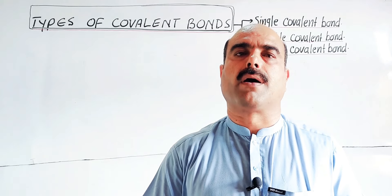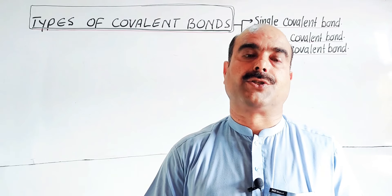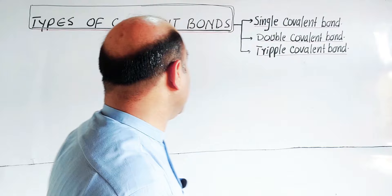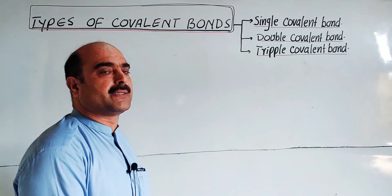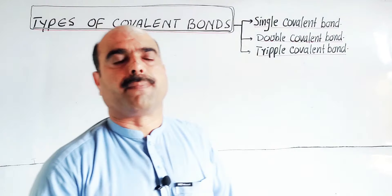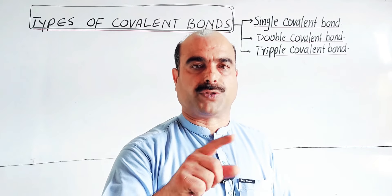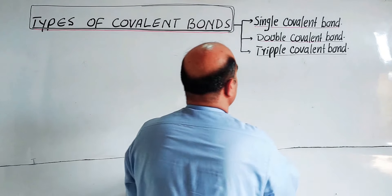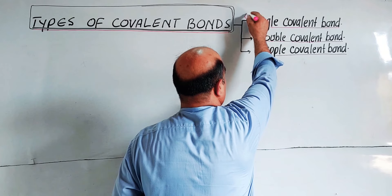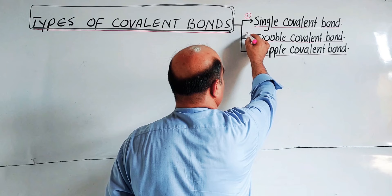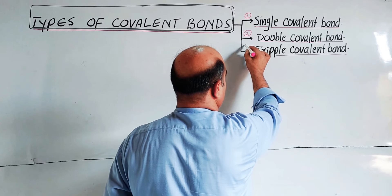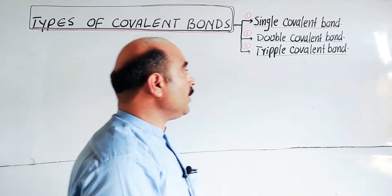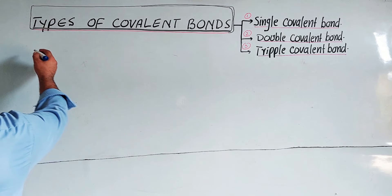These types are based upon the number of electron pairs shared between two atoms. On the basis of total number of electrons shared between two similar or two different atoms, there are three types: the first one is single covalent bond, the second one is double covalent bond, and the third one is triple covalent bond.